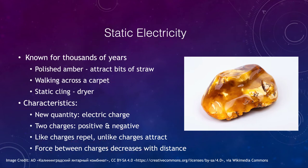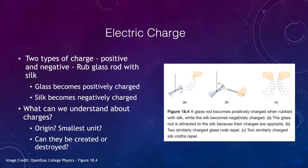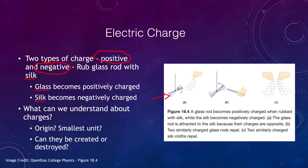Let's look at what we mean by electric charge. There are positive and negative charges. One way to demonstrate this is to take a glass rod, pictured here, and rub it with a piece of silk. The glass will become positively charged and the silk will become negatively charged, as electrons are transferred from the rod into the silk.